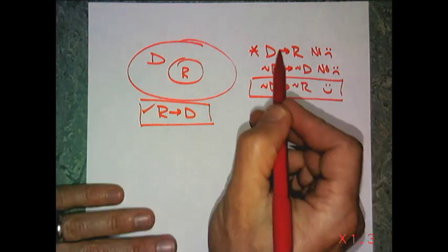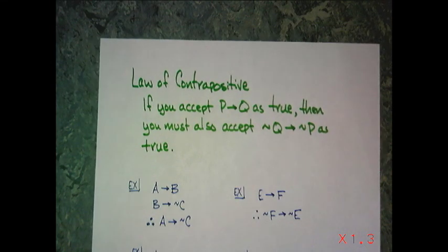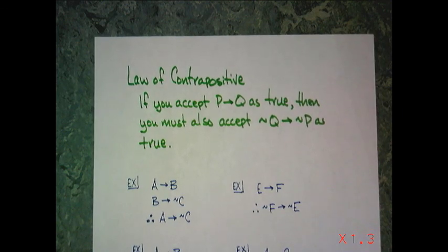So these two are always going to match also the contrapositive of each other. And the law of contrapositive states that if you accept P then Q as true, then you must also accept not Q then not P as also true. So I've changed the order and negated both of them. Those two statements match.